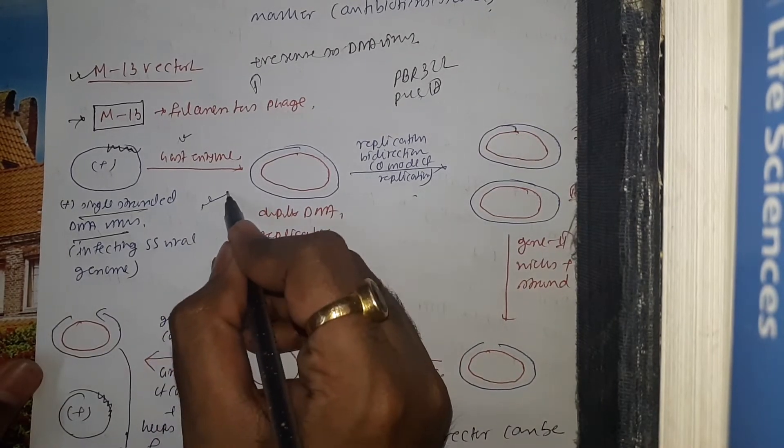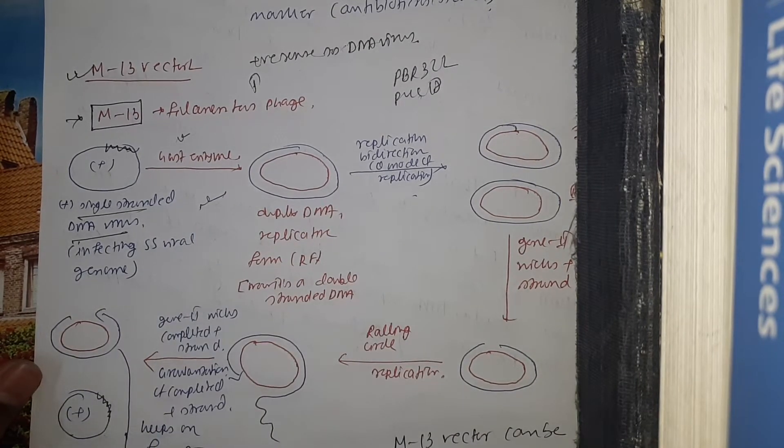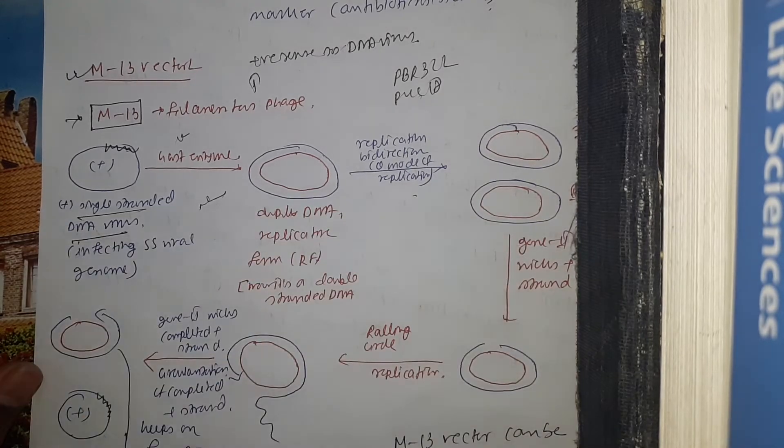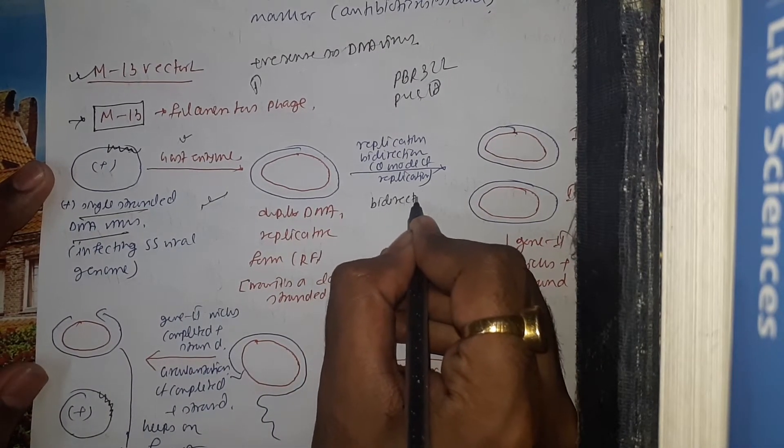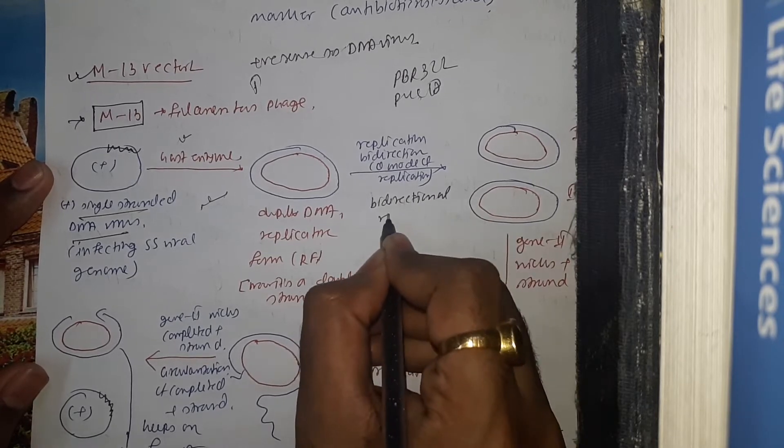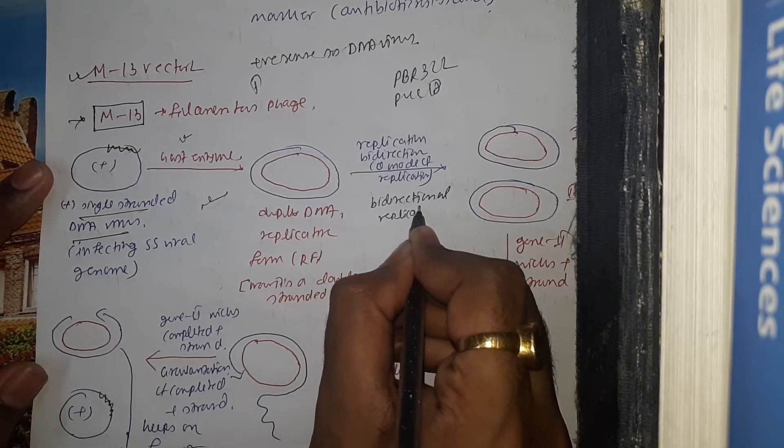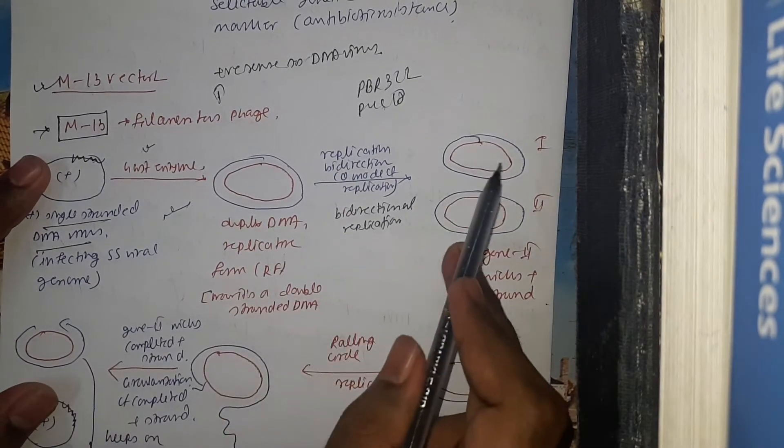Now it is a double-stranded DNA. They are converted into duplex DNA replicative form with the help of host enzyme. They will go for bidirectional replication, and this bidirectional replication is also known as theta mode of replication and gives us two products.